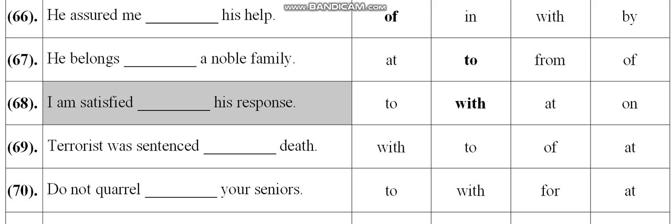Next, terrorist. The terrorist was sentenced blank death. So sentence to death hota sazai mautsu nana, dear students. Capital punishment kethate sazai mautsu nana. Sentence to death sazai mautsu nana. So 70th is do not quarrel blank your seniors. So do not quarrel with your seniors.